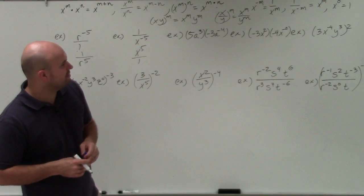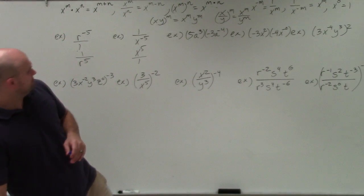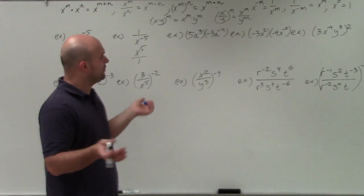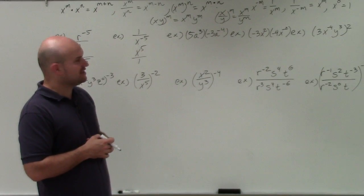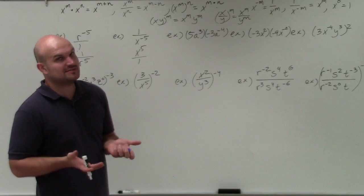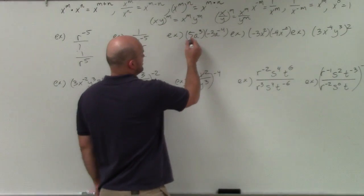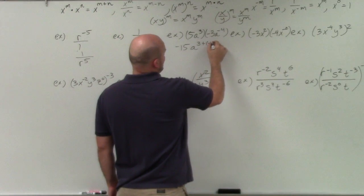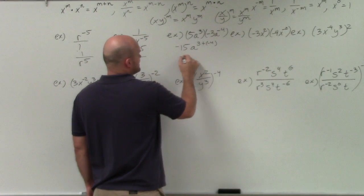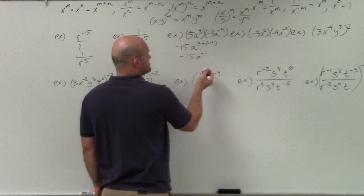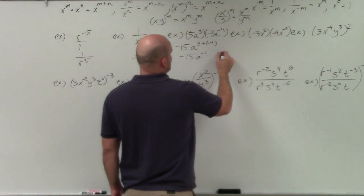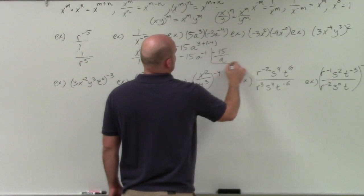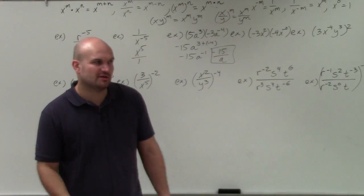Over here, however, we're going to apply the product rule, which is the exact same thing as what we've done before. You apply your operations just like before — just now negative exponents means dealing with a negative number. So I'm going to multiply 5 times negative 3, which is negative 15. Then I have a to the third plus negative 4, which gives me negative 15 a to the negative first power. Therefore, to rewrite this as a positive, my result will be negative 15 over a.